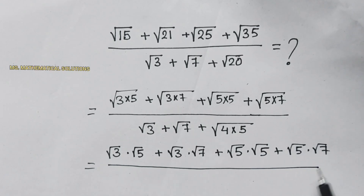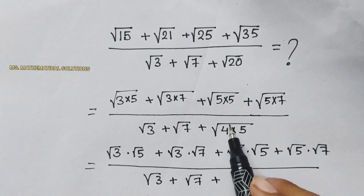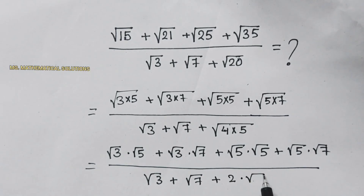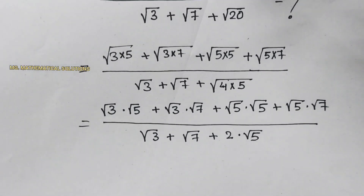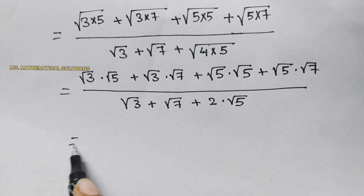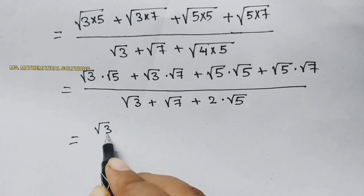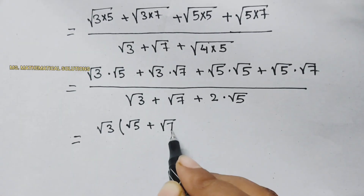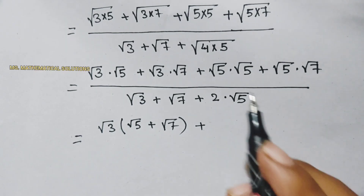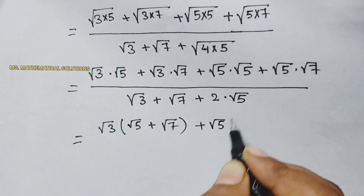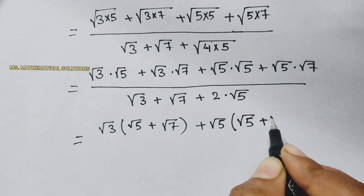The denominator is root 7 plus root 3 plus root under 4, and root 4 means 2, so that term becomes 2 times root 5. In the numerator, we take root 3 common from the first two terms: root 3 times the quantity root 5 plus root 7. Then we take root 5 common from the next two terms: root 5 times the quantity root 5 plus root 7.